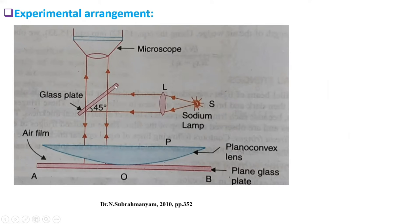Which falls on this glass plate, which is at an angle 45 degrees with horizontal. And here, after incidence of this light here, it is reflected towards the air film.